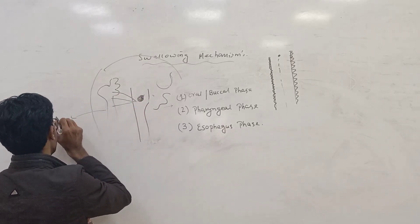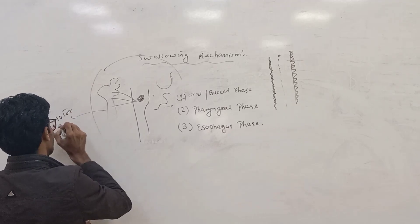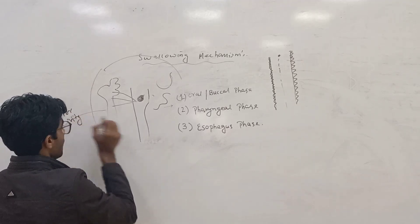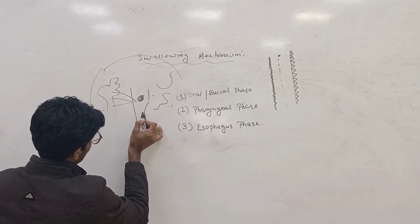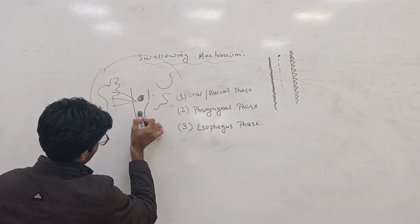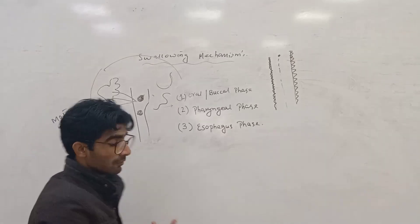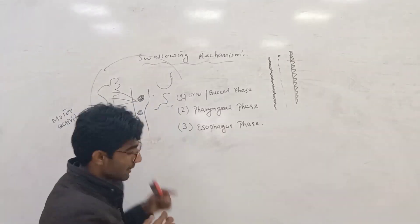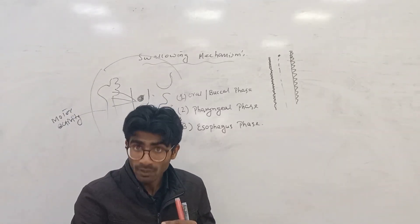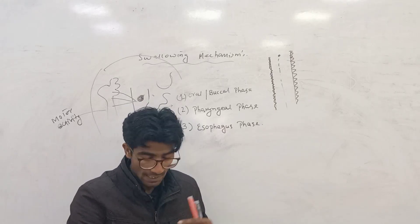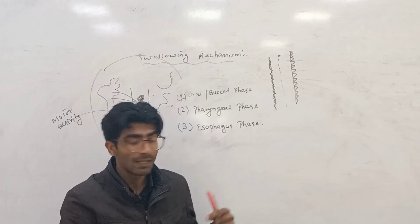Then food goes into the pharyngeal region. The pharyngeal region actually performs an important role because in this region the food goes downward toward the esophagus region, and from the esophagus the food goes into the stomach.